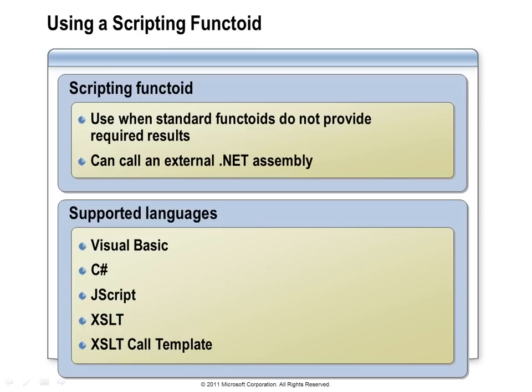If you have an existing XSLT file or need to take advantage of XSLT capabilities not built in — sorting, for example — you can set a property on your map to specify a custom XSLT file. You still configure the source and destination schemas, and when the map compiler compiles it, the map is added to the assembly and treated just like any other BizTalk map. The one disadvantage is you won't see anything on the map grid and can't use functoids to work with that map.